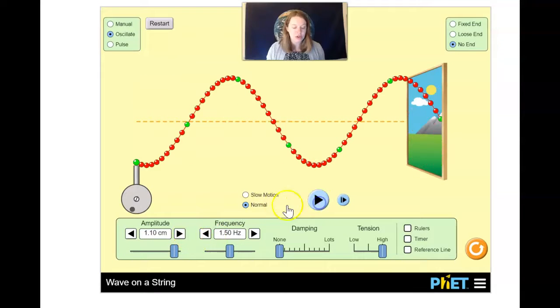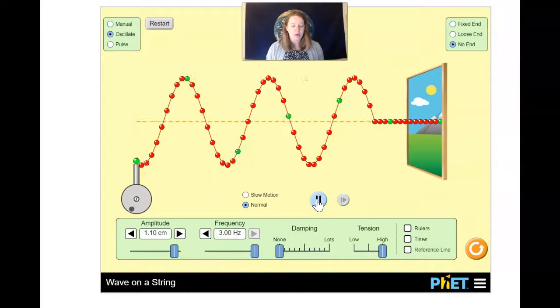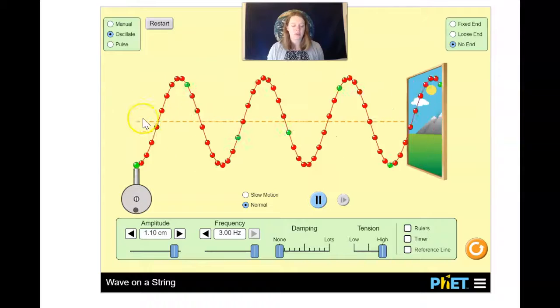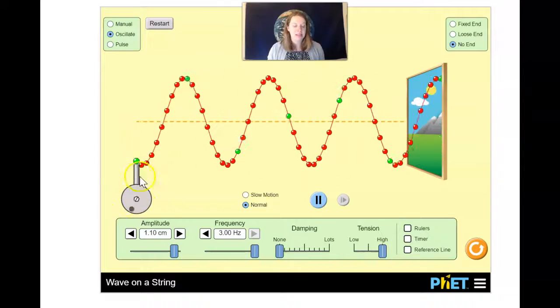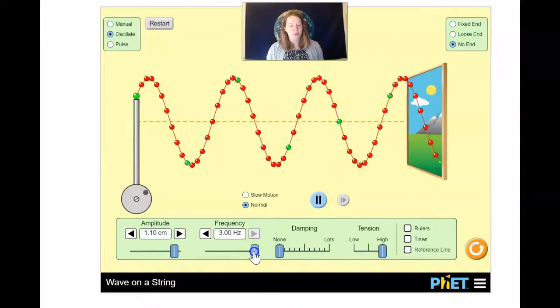We can also change the frequency. So I had the frequency at 1.5 hertz. I'm going to double that and do about three hertz. And we can see, oh my goodness, it is so very fast. So what's happening is the cycles are coming much more rapidly. There's a lot more cycles per second in this than there was before.